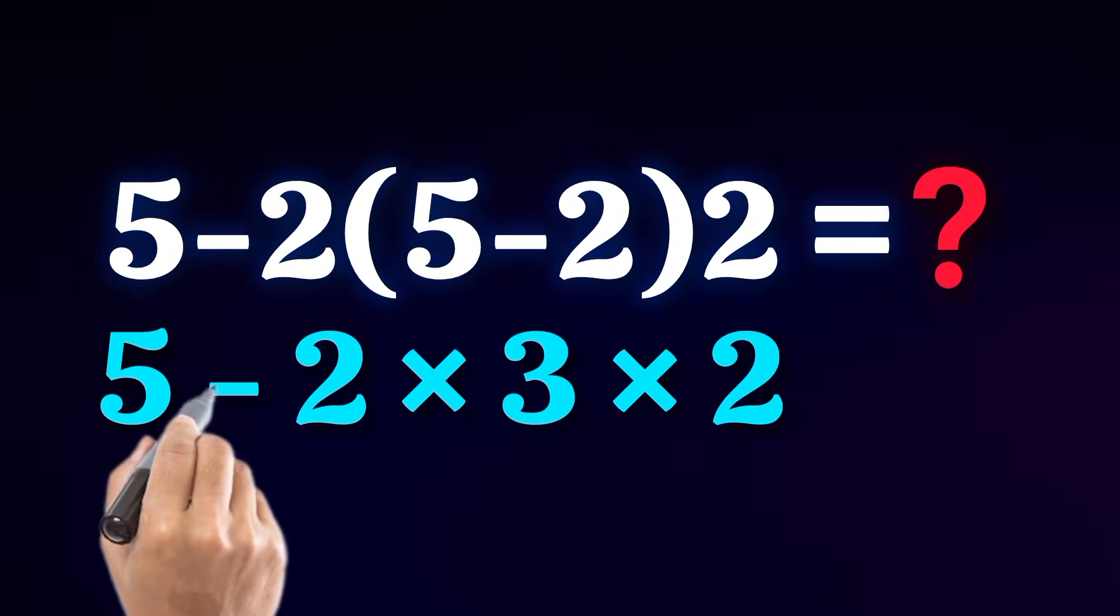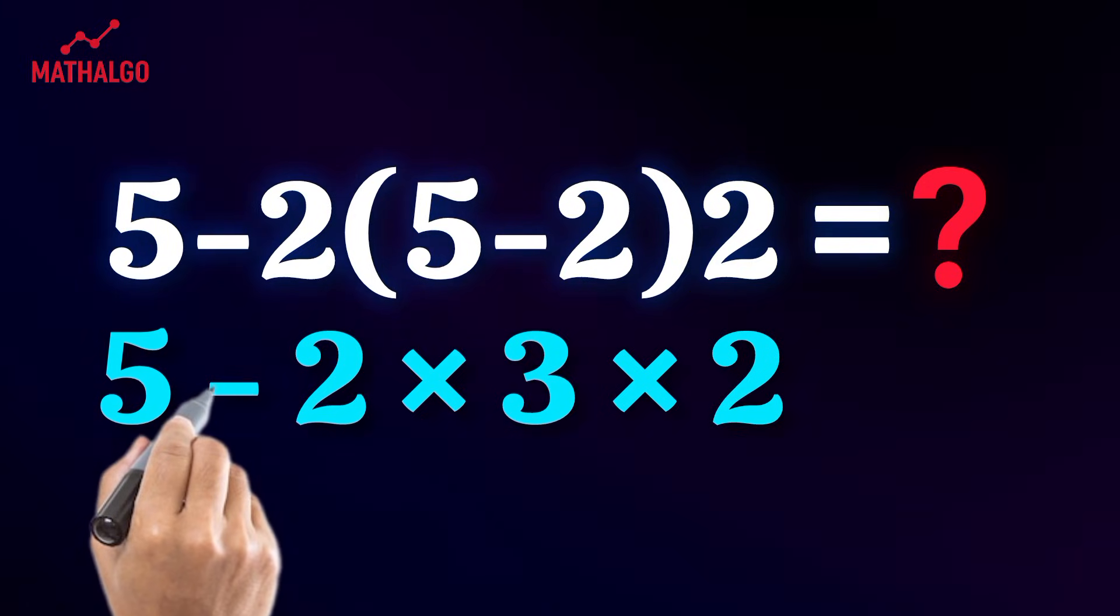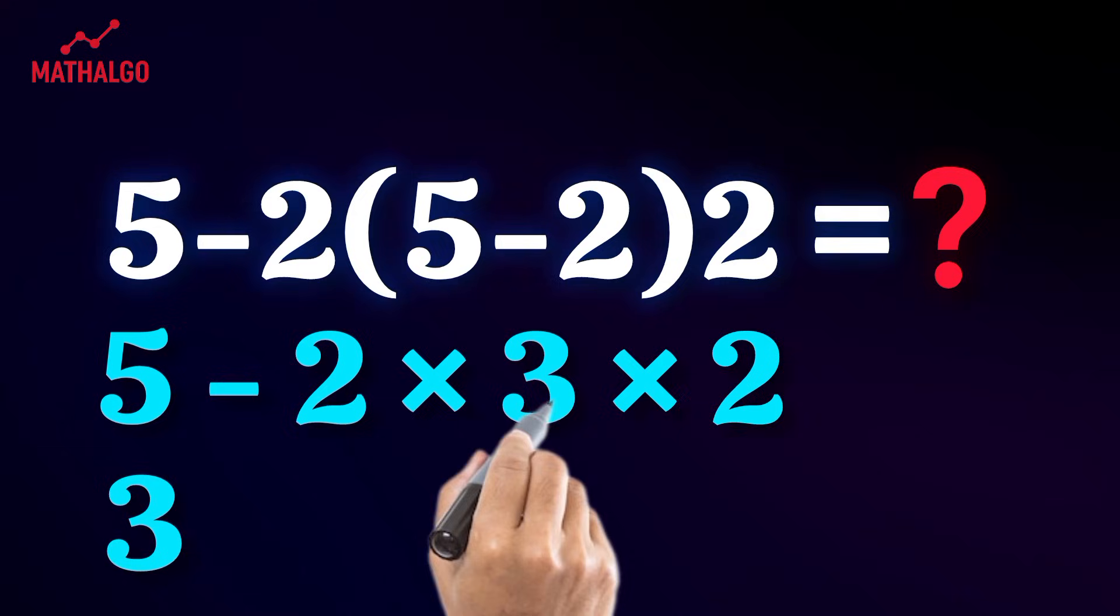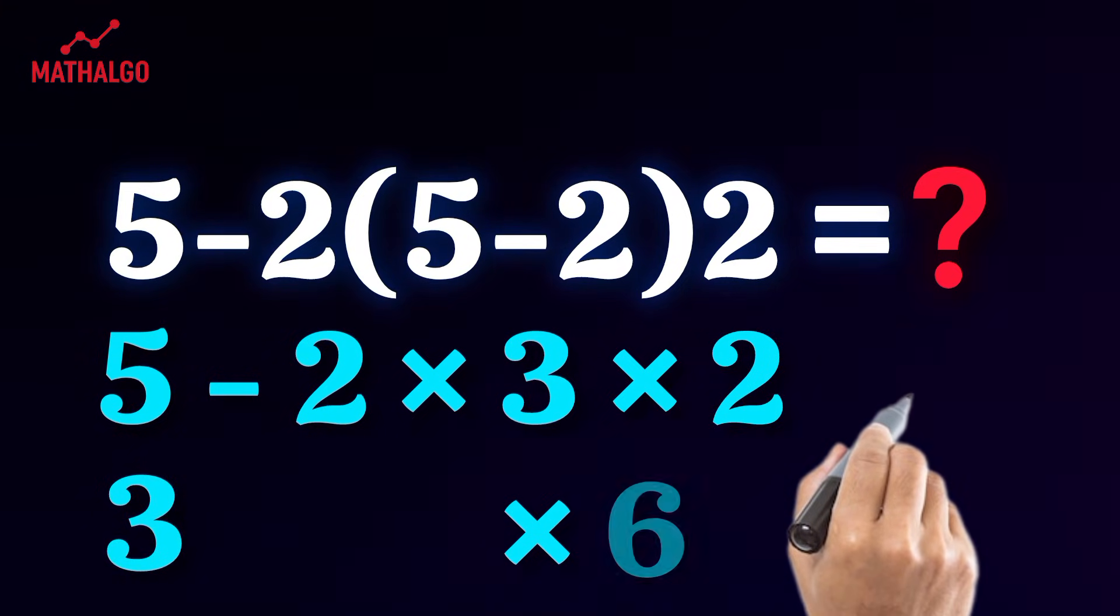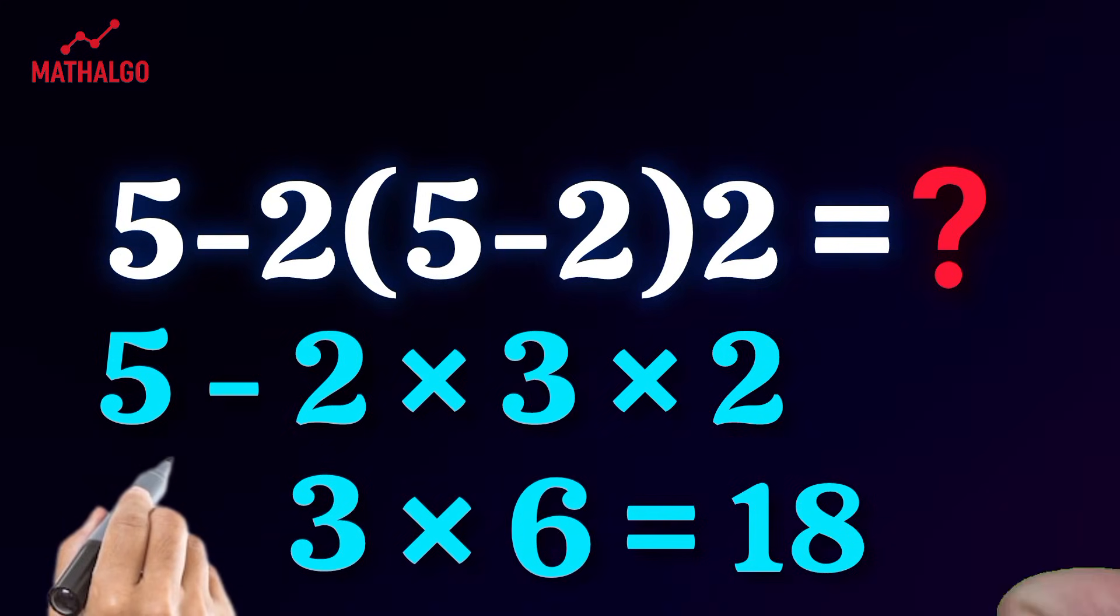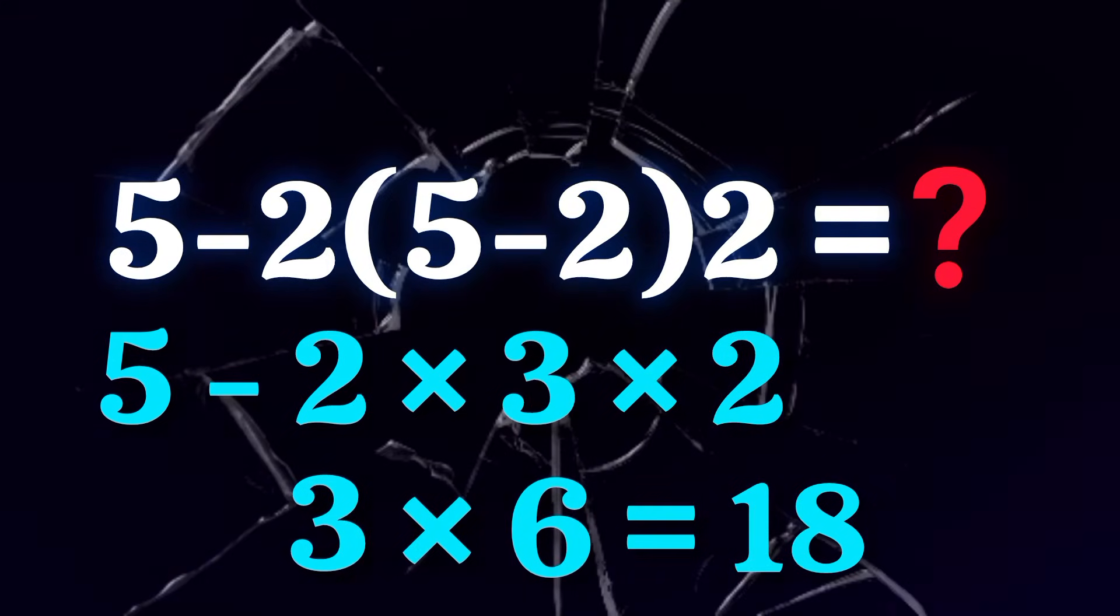Common mistake, they subtract first 5 minus 2 equals 3. Then multiply 3 by 2 equals 6. Finally 3 times 6 equals 18. Boom! Confident answer 18.